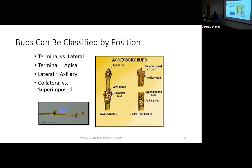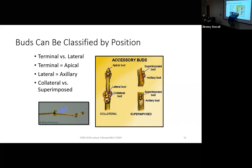When we start looking at different buds, you can have a terminal bud versus lateral buds on the side. Another name for terminal buds is apical buds — those are synonymous. Lateral buds can also be called axillary buds — those are synonymous. Sometimes we have collateral or superposed buds. Here's a good example of collateral flower buds on northern spice bush — you can see they're all little round stops. They're collateral because they're beside the vegetative buds. This is similar to some red maple twigs, where you have a lateral bud on the side of the twig surrounded by collateral flower buds.